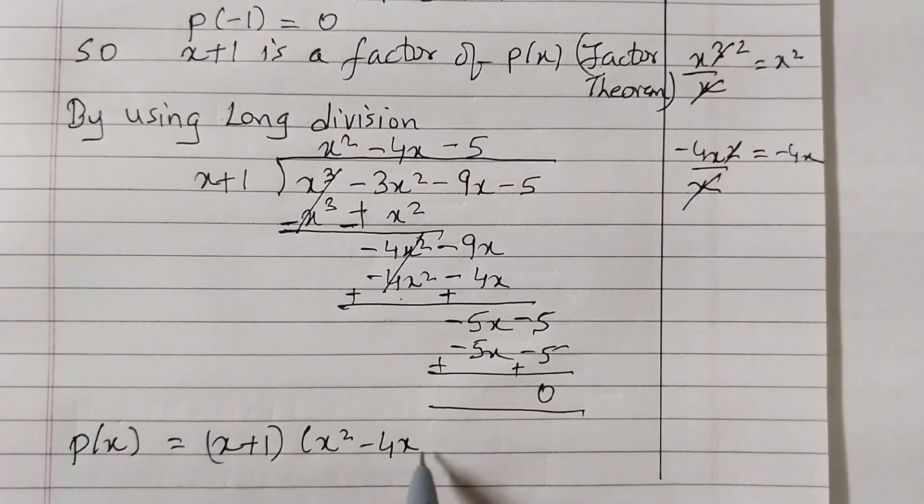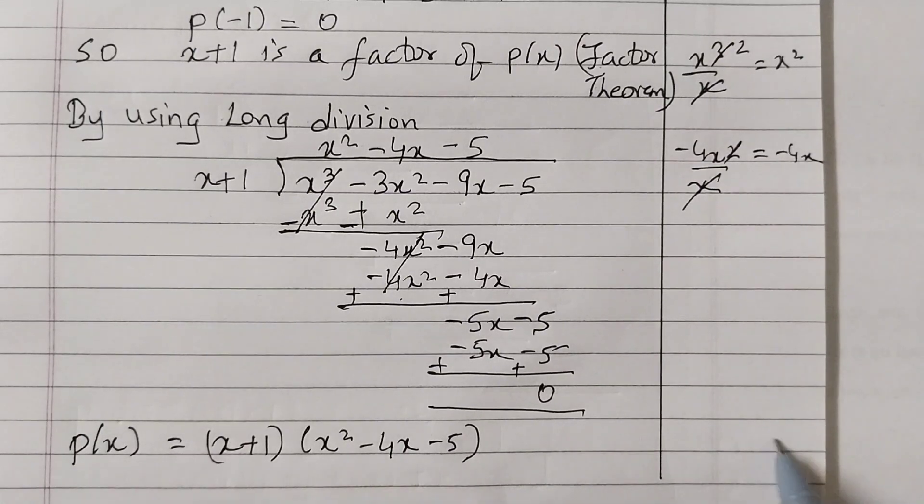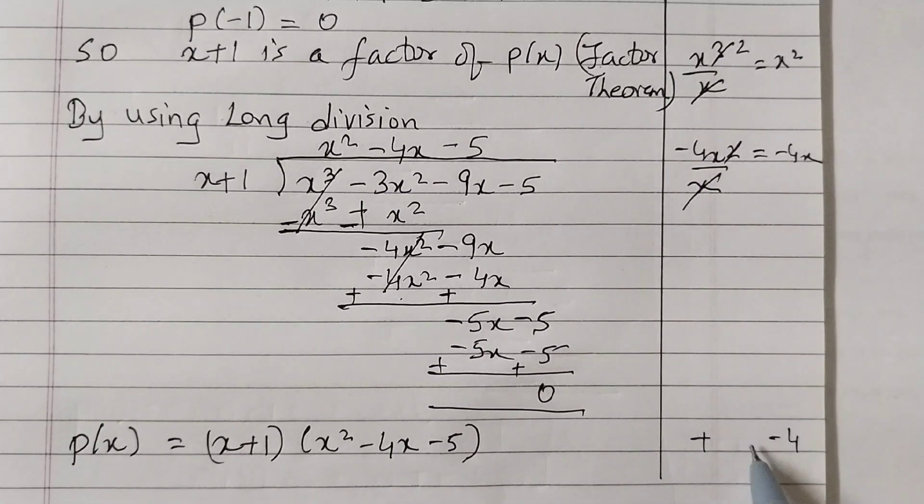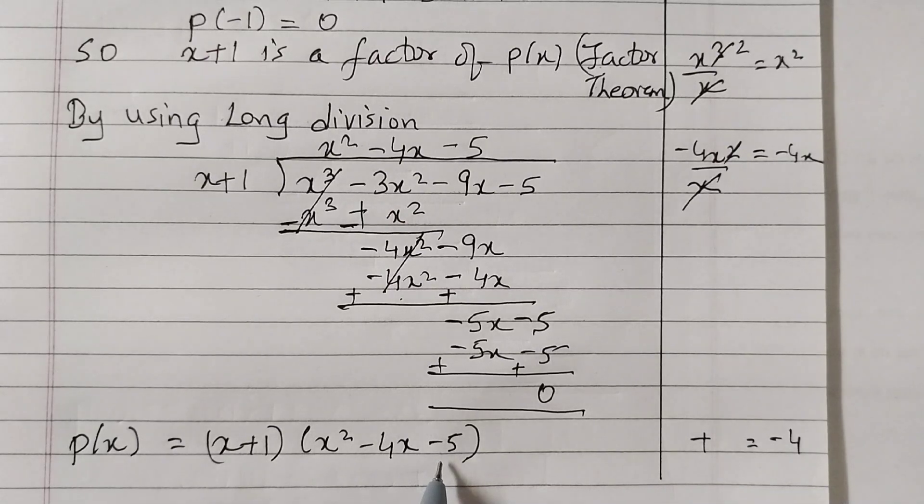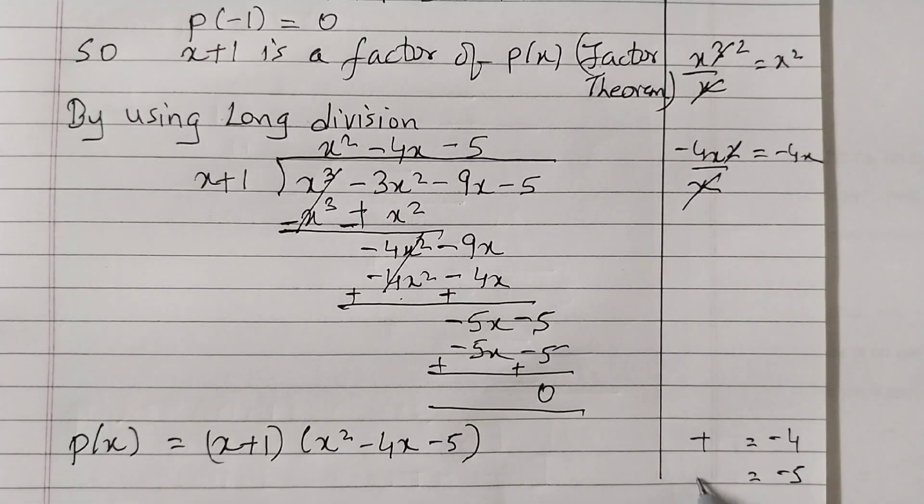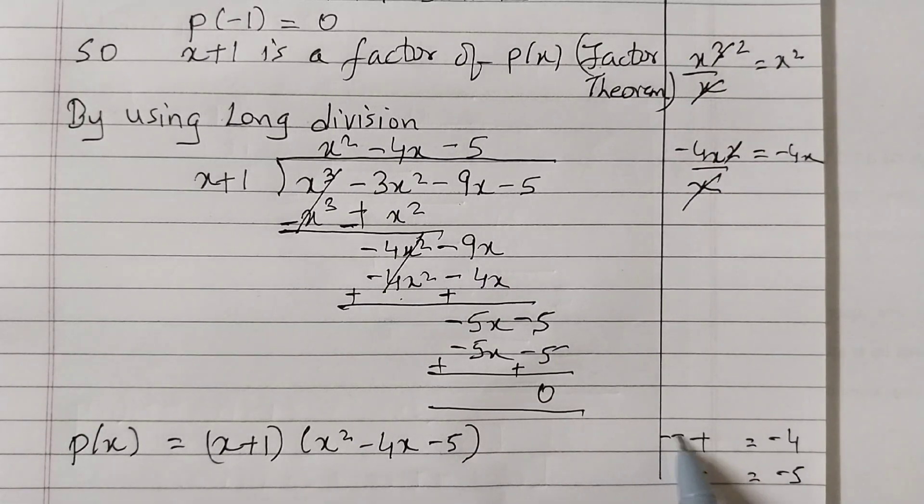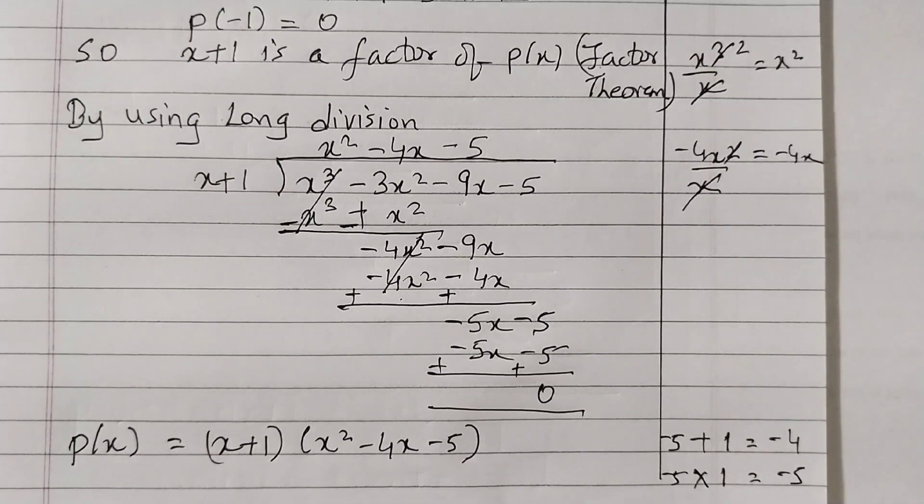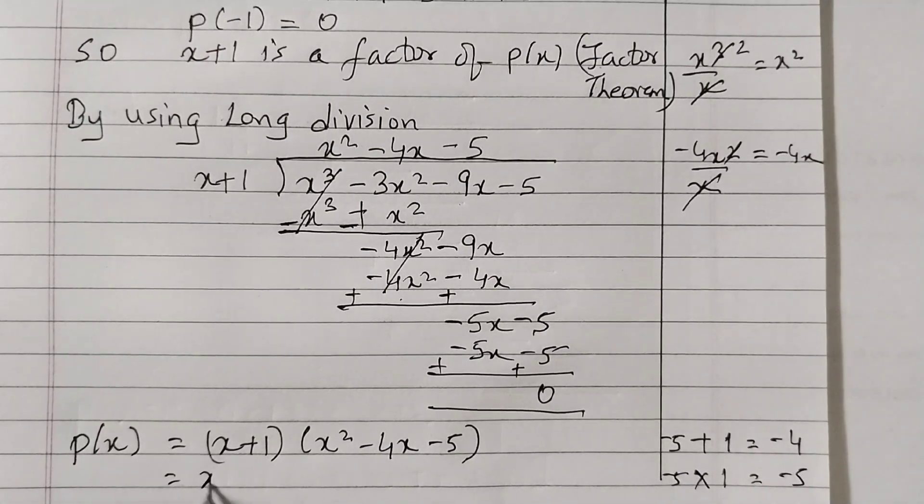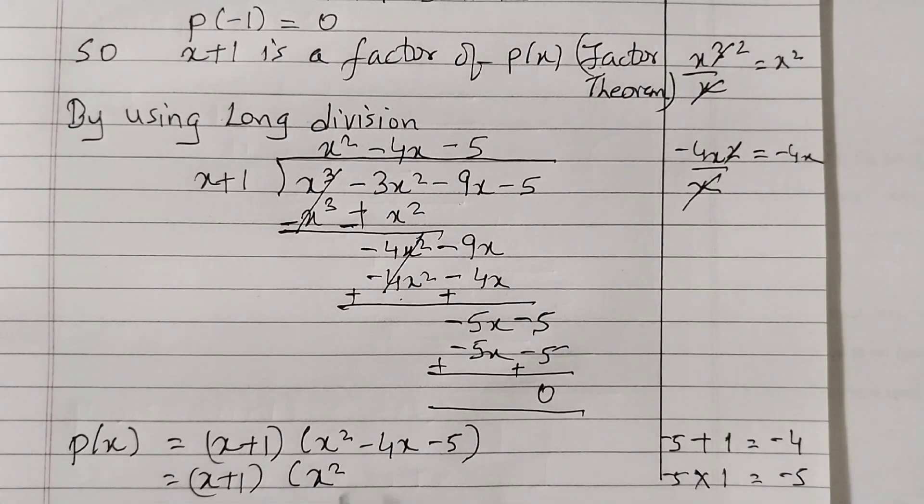This can be further factorized by splitting the middle term. So the middle term is minus 4. We need two numbers which add up to minus 4 and whose product is minus 5. So the two numbers are minus 5 plus 1 and minus 5 into 1. These two numbers would give the sum as minus 4 and the product as minus 5.